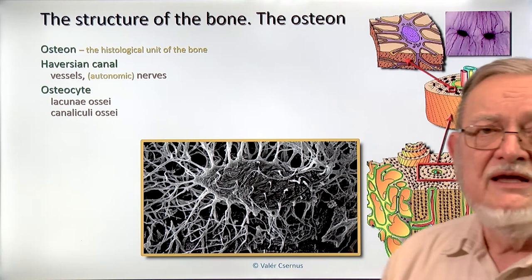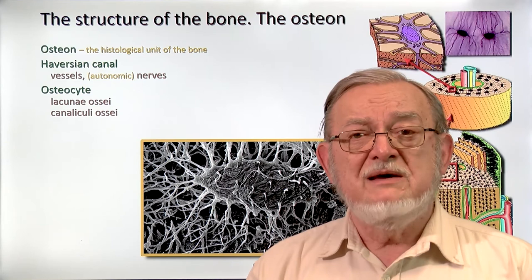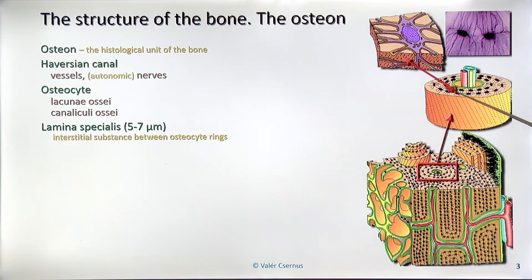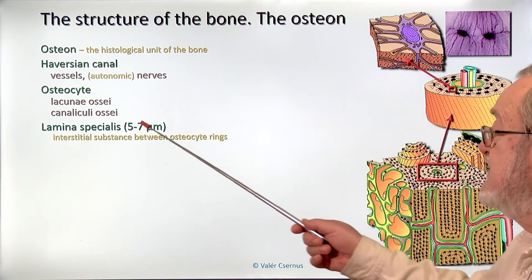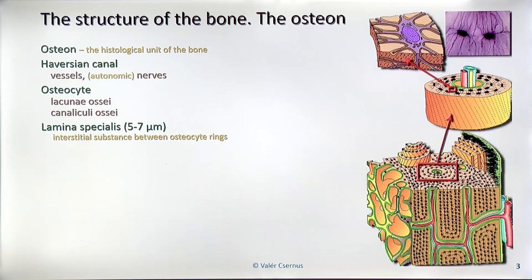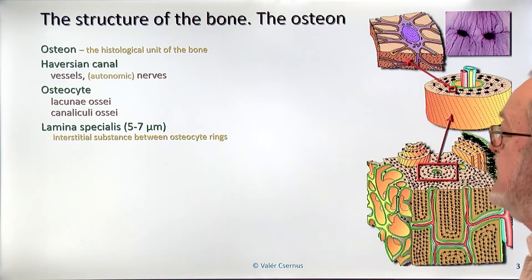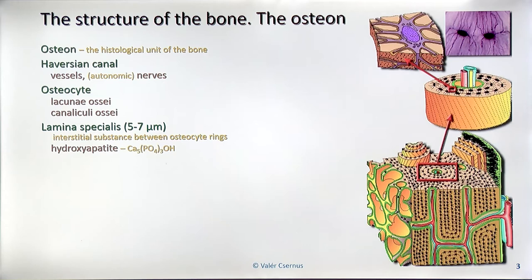With these processes, cells are in contact with neighboring cells via gap junctions, allowing nutrients and oxygen to pass more easily. Between two osteocyte rings we have the intercellular substance of the bone — a cylindric unit of this intercellular substance between two neighboring osteocyte rings is named the lamina specialis. The lamina specialis is about five to seven micrometers in thickness, and it does not include cells — it is purely interstitial substance between two neighboring osteocyte rings.